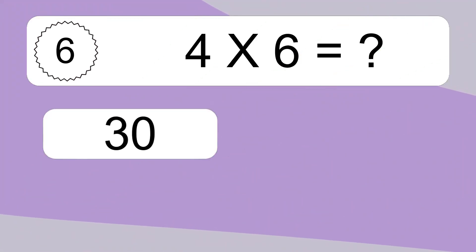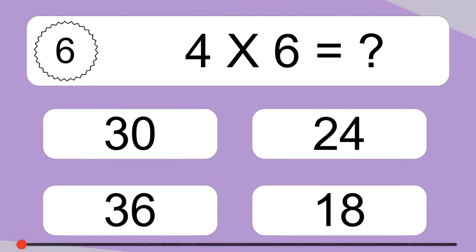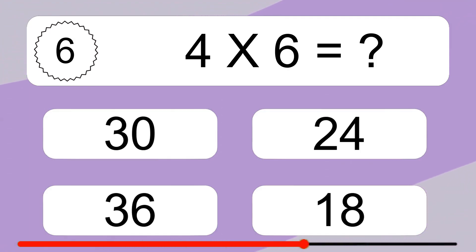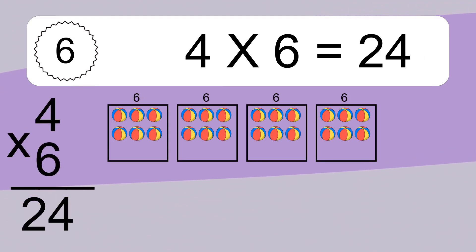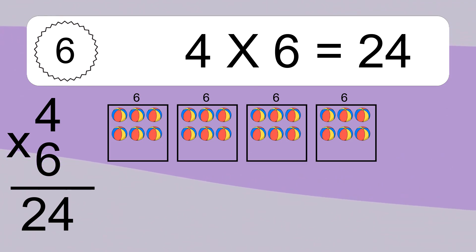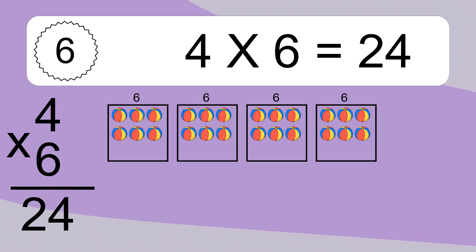Four times six equals what? Four times six equals 24. We have four boxes, and each box has six colorful balls inside. If you count all the balls in all the boxes together, you will have four times six balls. This equals 24 balls.